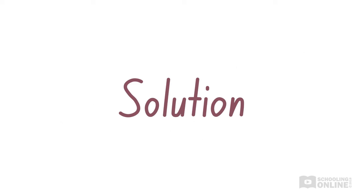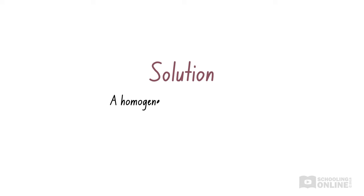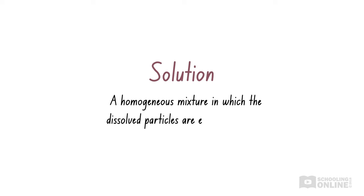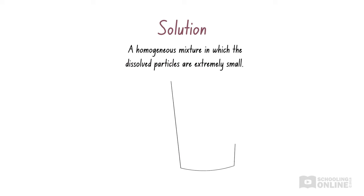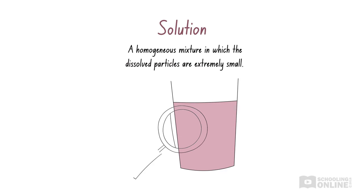Now, let's look at solutions. A solution is a homogeneous mixture in which the dissolved particles are extremely small. These dissolved particles may be ions, such as chloride ions or sulfate ions, or small molecules, such as oxygen or glucose. In other words, the particles in the mixture are invisible to the naked eye, and they are distributed evenly throughout.